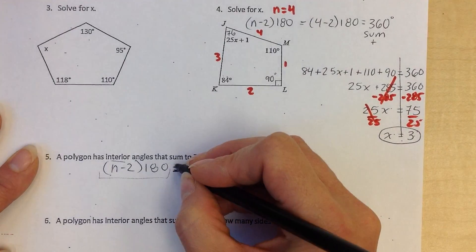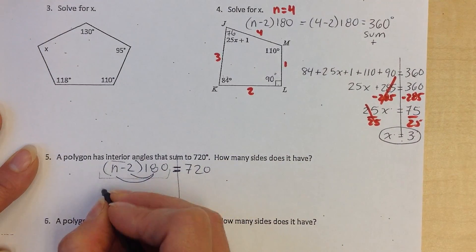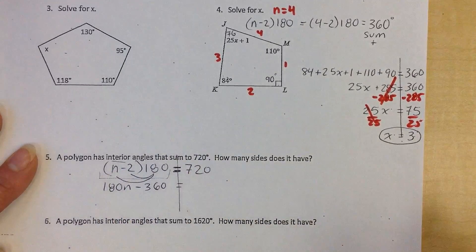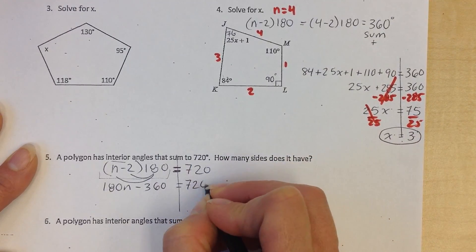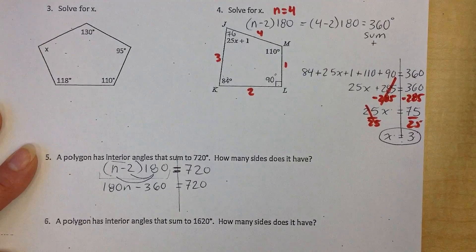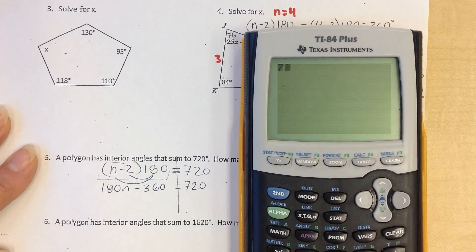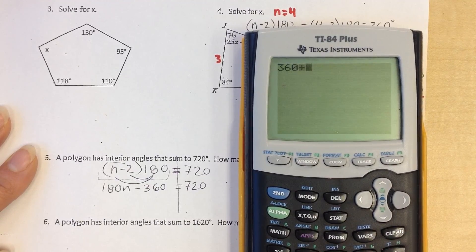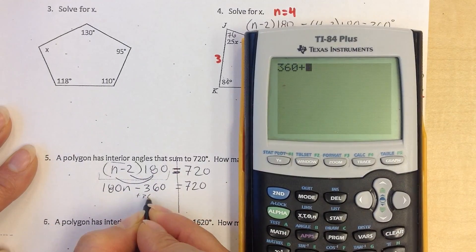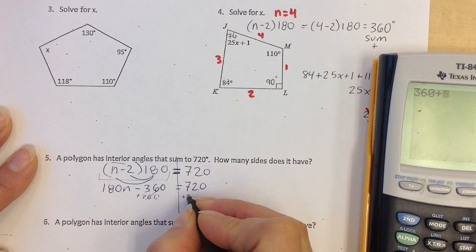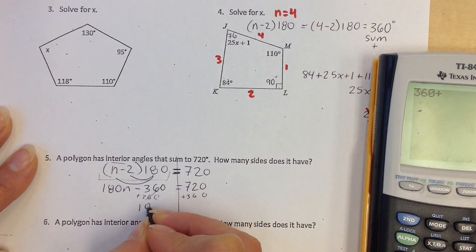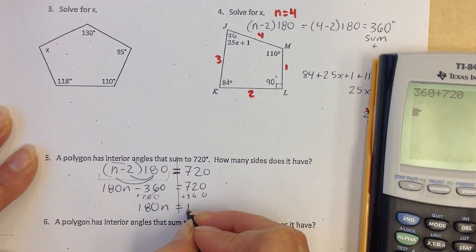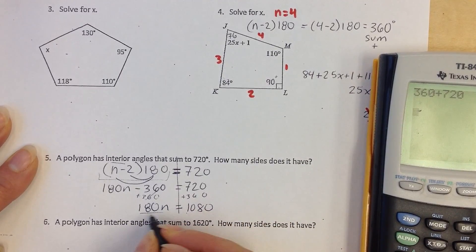And now what I can do is just work backwards algebraically. So this is distributing. I have 180n minus 360. You actually can start by dividing both sides by 180 if you understand why you can do that. That's a good way to do it, too. Most students are more comfortable simplifying first, doing the distributive property. So I'm going to add 360 to both sides. So I have 180 times n equals 1080. And now I'm going to divide both sides by 180.